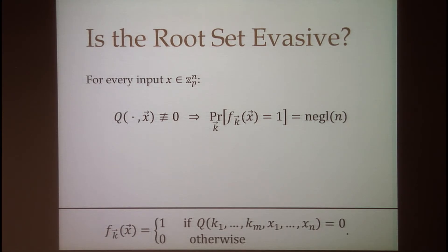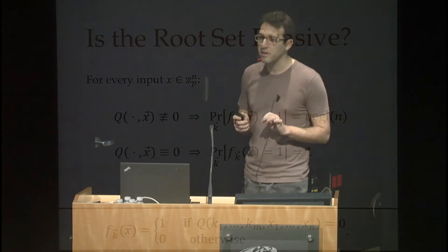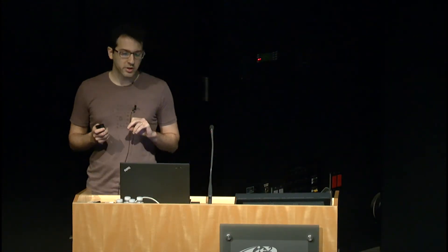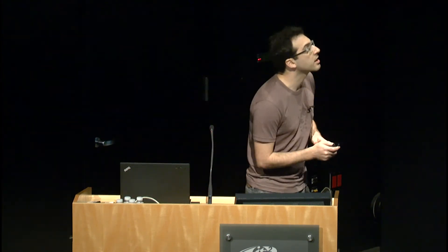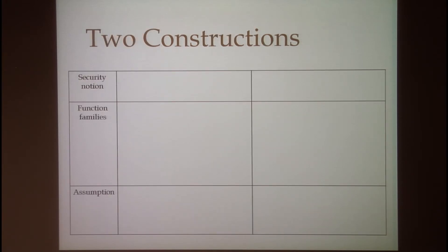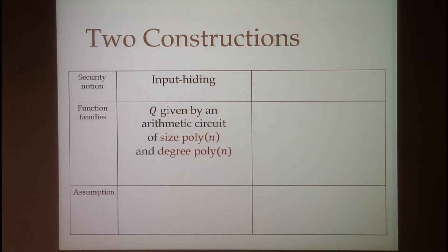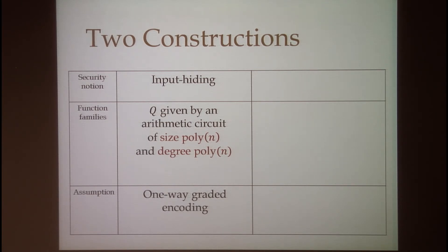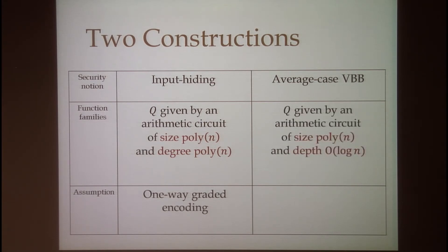A minor issue is that for some values of x the polynomial may become identically zero, causing the function to output 1 for all keys. We show these families are evasive up to a translation by some public functions, and for our purposes this difference is not important. Our first construction is of input hiding obfuscation, working for every function family defined by a polynomial q given as an arithmetic circuit of polynomial size and polynomial degree, secure based on the existence of one-way graded encodings. We also have a construction of average case VBB for a slightly smaller class where q is given by an arithmetic circuit of logarithmic depth, secure based on a new assumption we call perfectly hiding graded encodings.